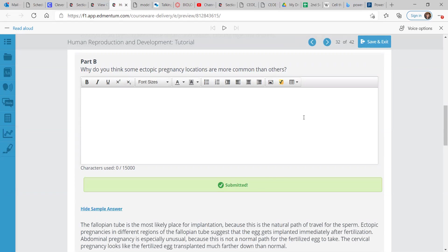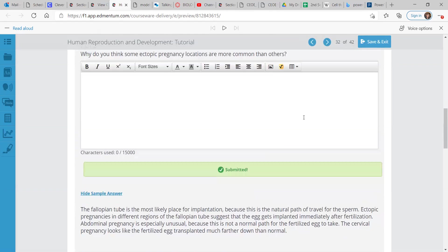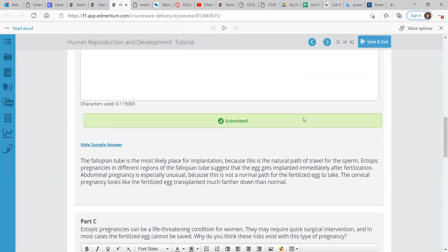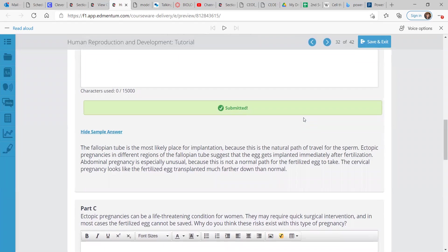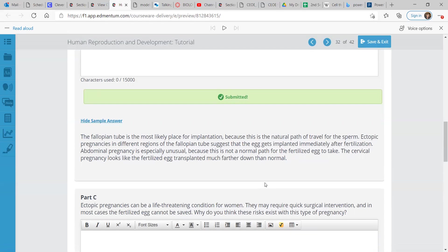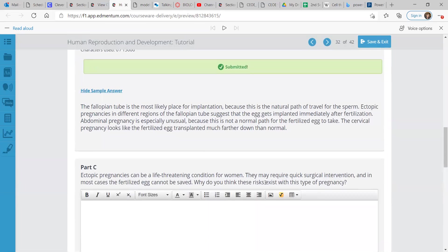Why do you think some ectopic pregnancy locations are more common than others? The fallopian tube is the most likely place for implantation. That is the natural path of travel for the sperm. The different regions other than the fallopian tube suggest that the egg gets implanted immediately after fertilization. So, abdominal pregnancy is especially unusual because that is not a normal path for the fertilized egg to take. The cervical pregnancy looks like the fertilized egg transplanted much farther down than normal.